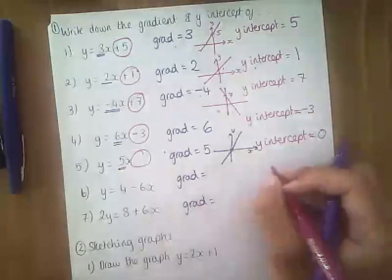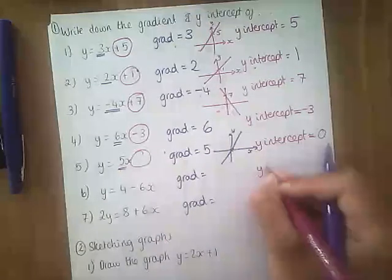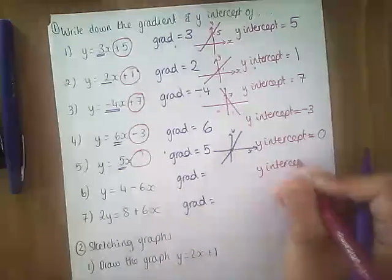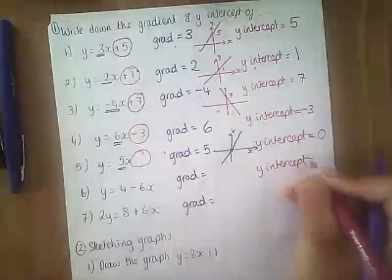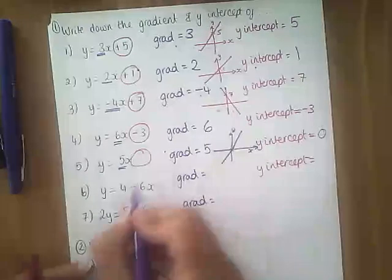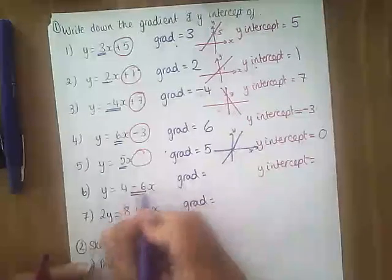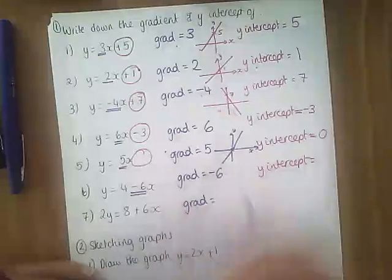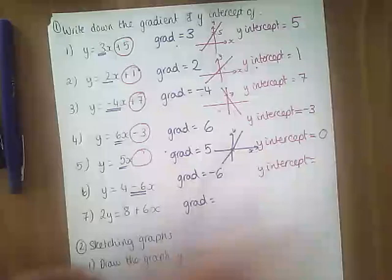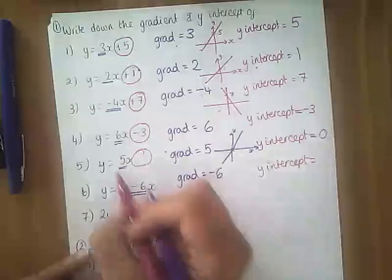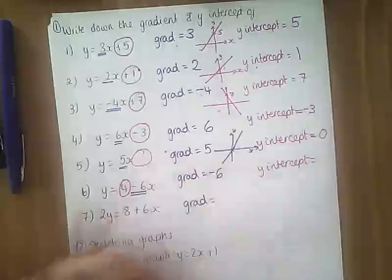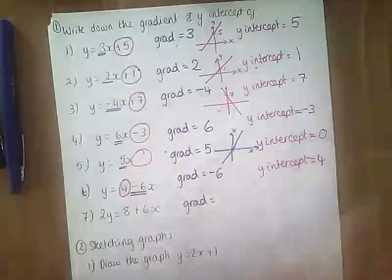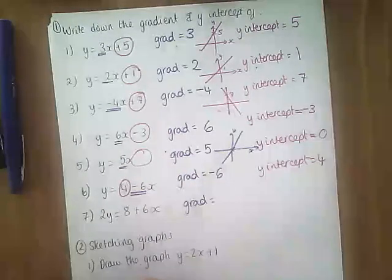Number 6: we want the gradient, so the gradient is the number in front of x. The number in front of x here is minus 6, and the y-intercept is the other number, so the y-intercept is 4.